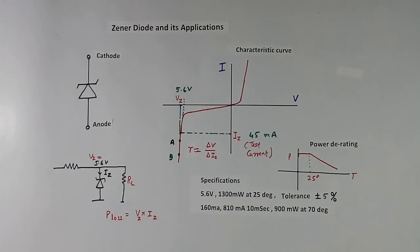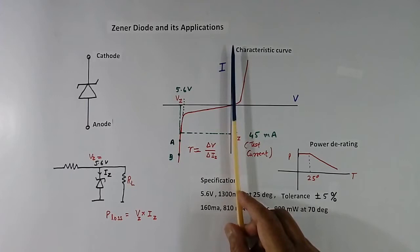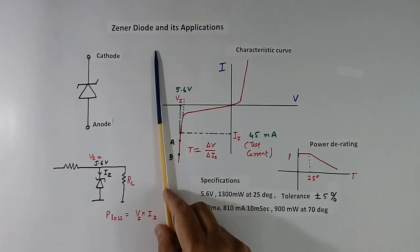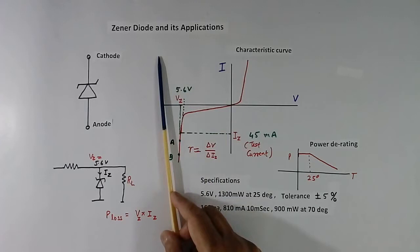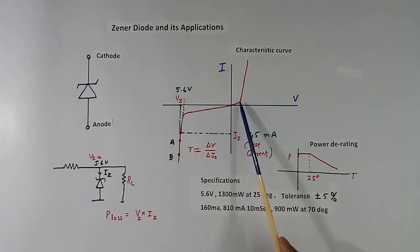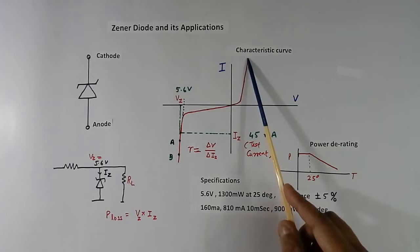This is characteristic curve of Zener diode. This is V, this is I. It operates in two ways. This side is positive, this side is negative. This side it behaves like normal diode, this side it behaves like Zener diode. In this side, when voltage exceeds more than 0.7V, say for silicon diode, current will increase suddenly.